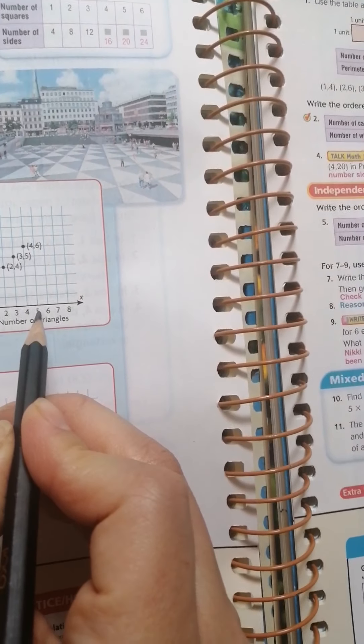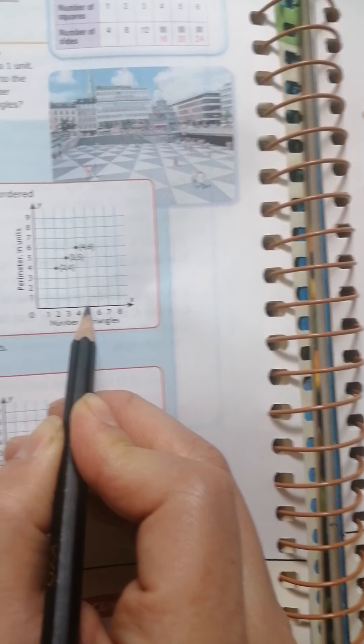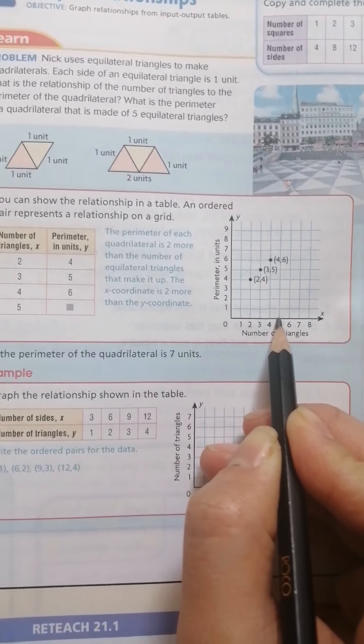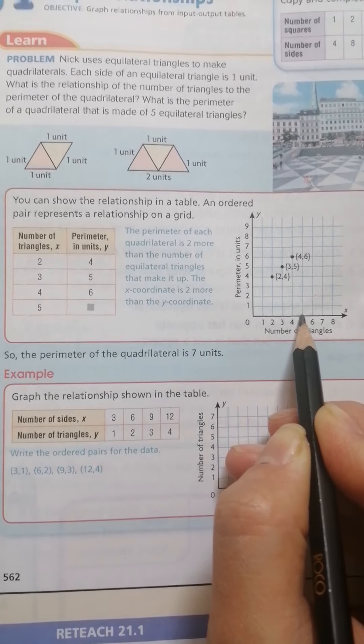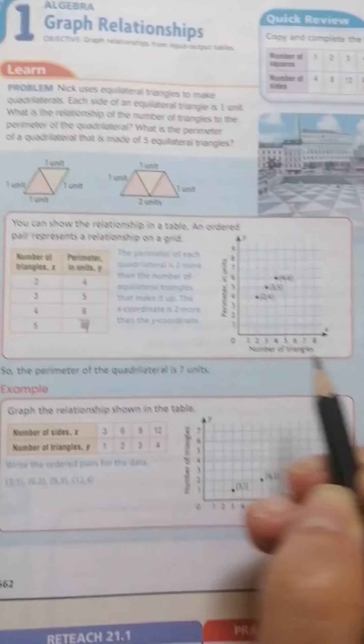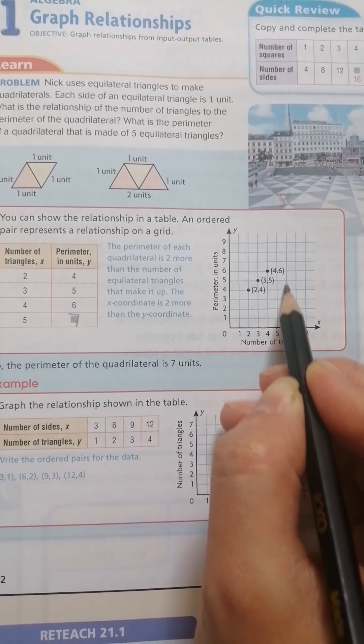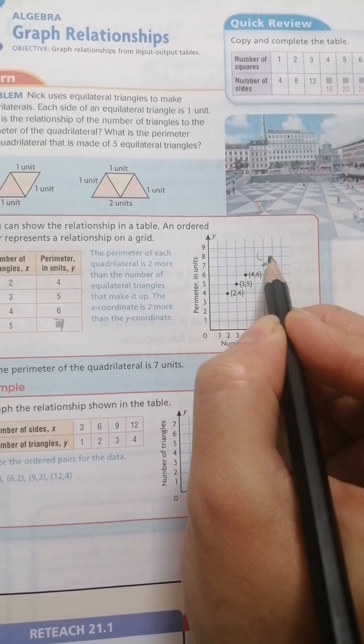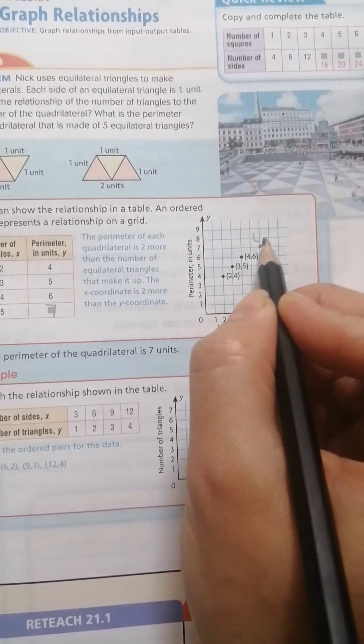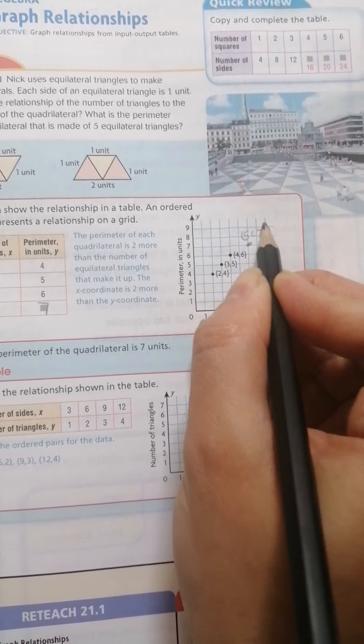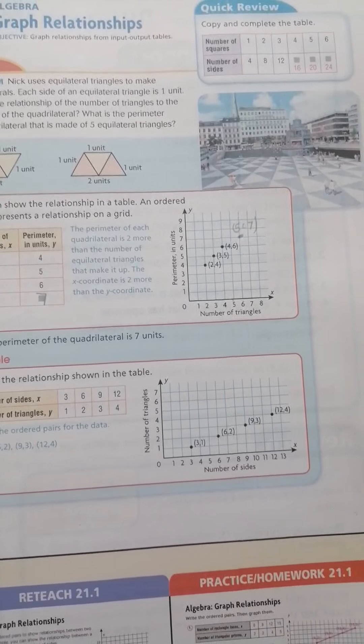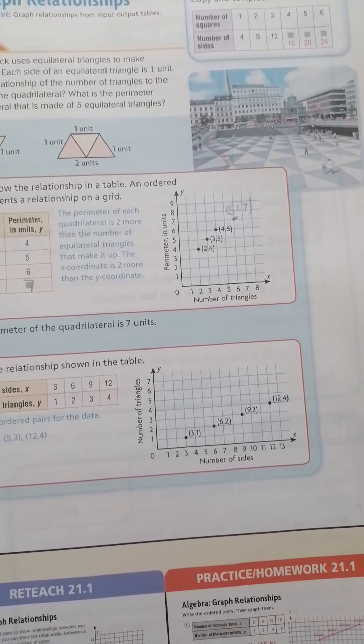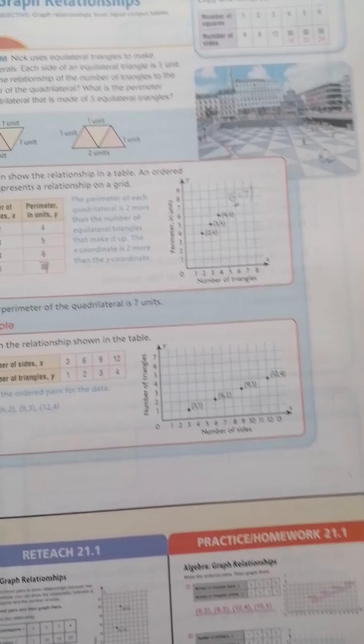Look at here, this in 5. And how many in y, here equal 7. Then 5 and go up 7. Then make the point and write the ordered pair here, 5, 7. You can understand what's the meaning graph relationships. You can understand.